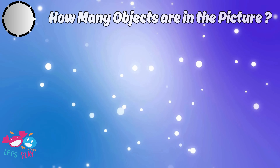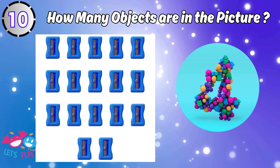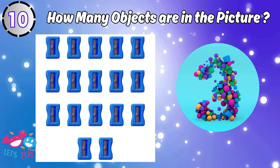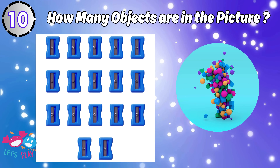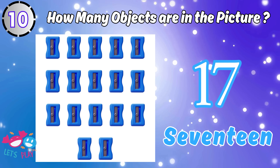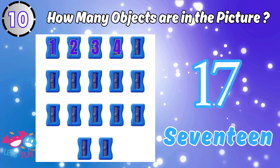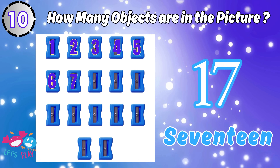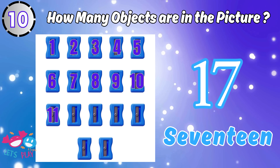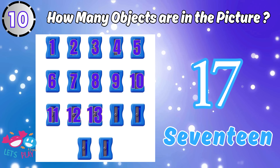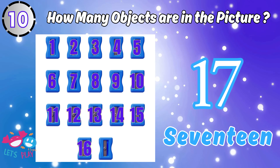How many objects are in the picture? Four. One, two, three, four, five, six, seven, eight, nine, ten, eleven, twelve, thirteen, fourteen, fifteen, sixteen, seventeen.